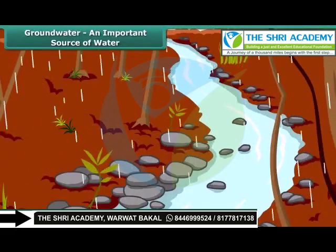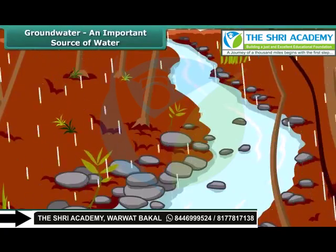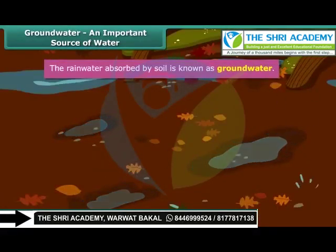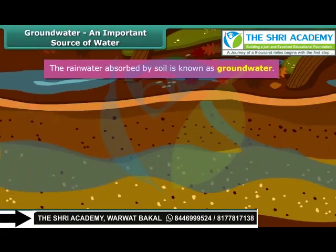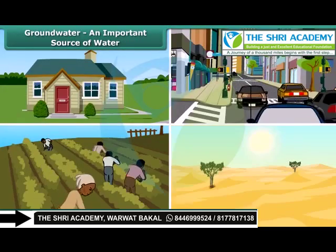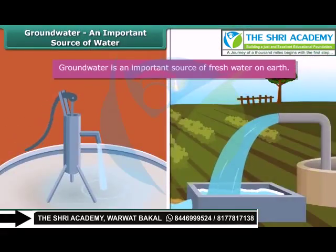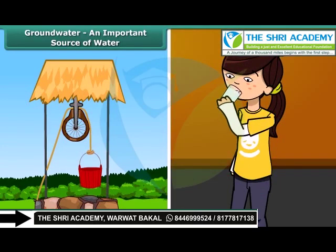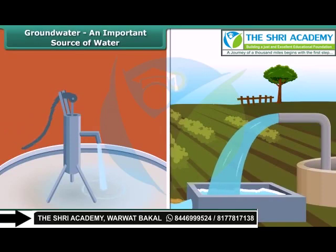Not all the rain water flows into rivers and ultimately into oceans. Some of it is absorbed by the soil. This water is known as ground water. Although it is not visible, it is almost everywhere, flowing beneath the ground under your home, cities, farms and deserts. Ground water is an important source of fresh water on earth. It is the source of water for many lakes and wells. Many of us drink ground water every day, because hand pumps and tube wells tap ground water to provide water for consumption.